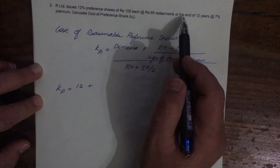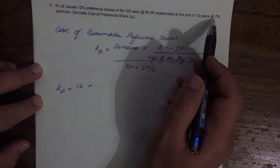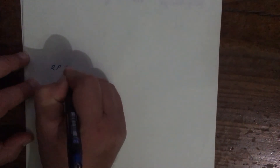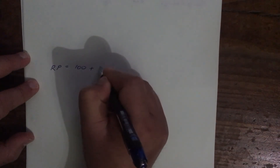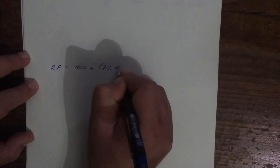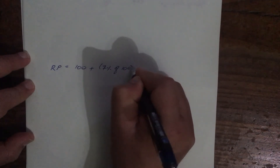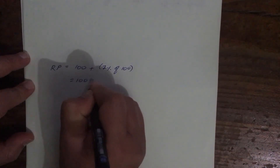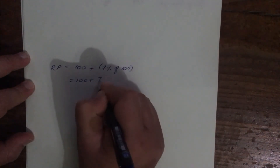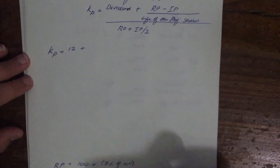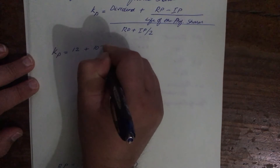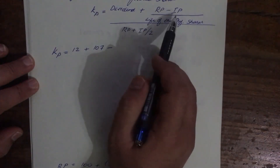It says redeemable at the end of 12 years at 7% premium. So what is your redemption price? RP equals 100 (the face value) plus 7% of 100, because it'll be redeemed at a premium. So 100 plus 7 equals 107. The redemption price is 107.